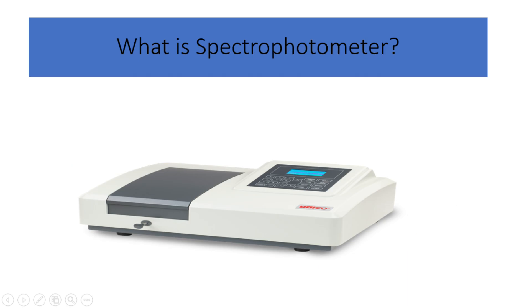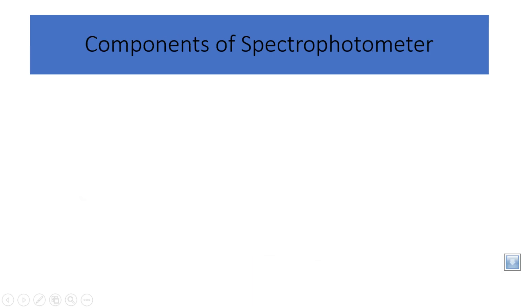What is a spectrophotometer? A spectrophotometer is a device used in spectroscopy to measure light intensity as a function of its wavelength. It consists of several key components that work together to enable accurate spectral analysis.